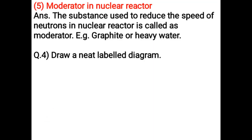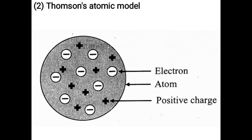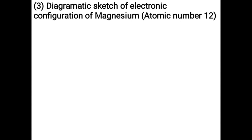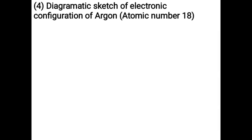Draw neat labelled diagrams of: Rutherford's scattering experiment, Thomson's atomic model, the electronic configuration of magnesium (atomic number 12), and the electronic configuration of argon (atomic number 18).